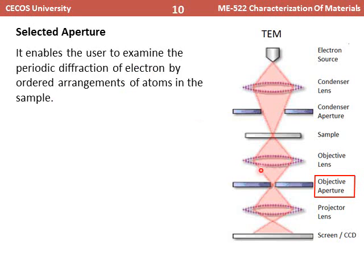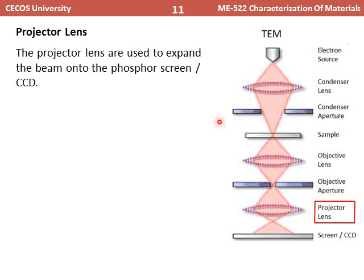The selected area aperture enables the user to examine the periodic diffraction of electrons by the ordered arrangement of atoms. Then comes the projector lens, which is used to expand the beam onto the phosphor screen or CCD camera for final imaging.